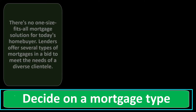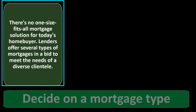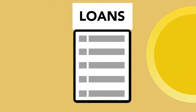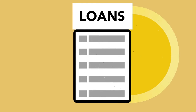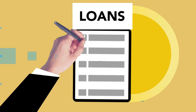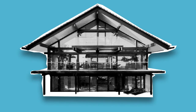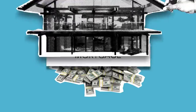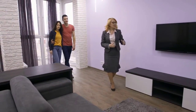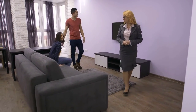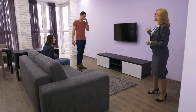Decide on a mortgage type. There's no one-size-fits-all mortgage solution for today's home buyers; lenders offer several types to meet the needs of diverse clientele. Think of the baseline standard home loan as a ground floor, then start to compare and deviate from there, noting that as you do, loans get more complex. That complexity will be applicable further out into the future.